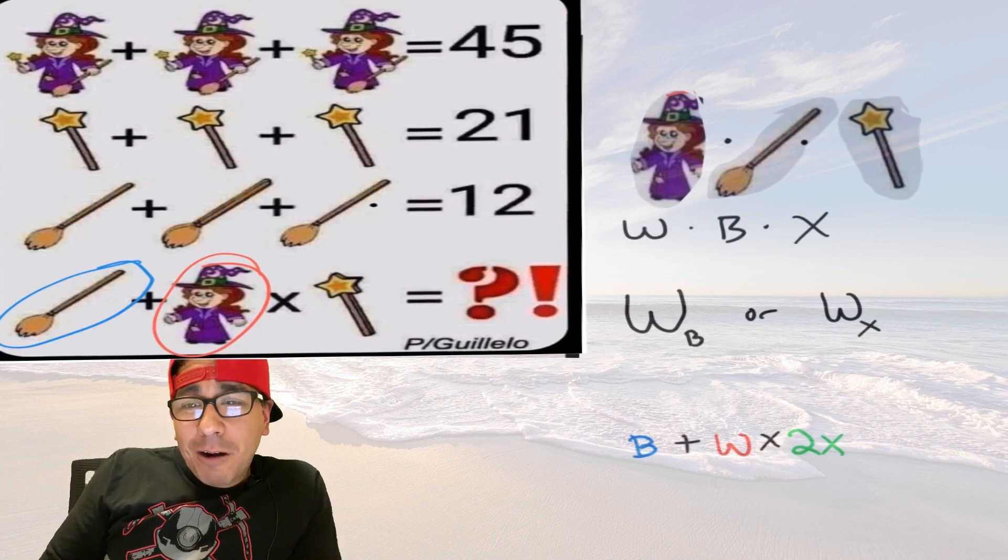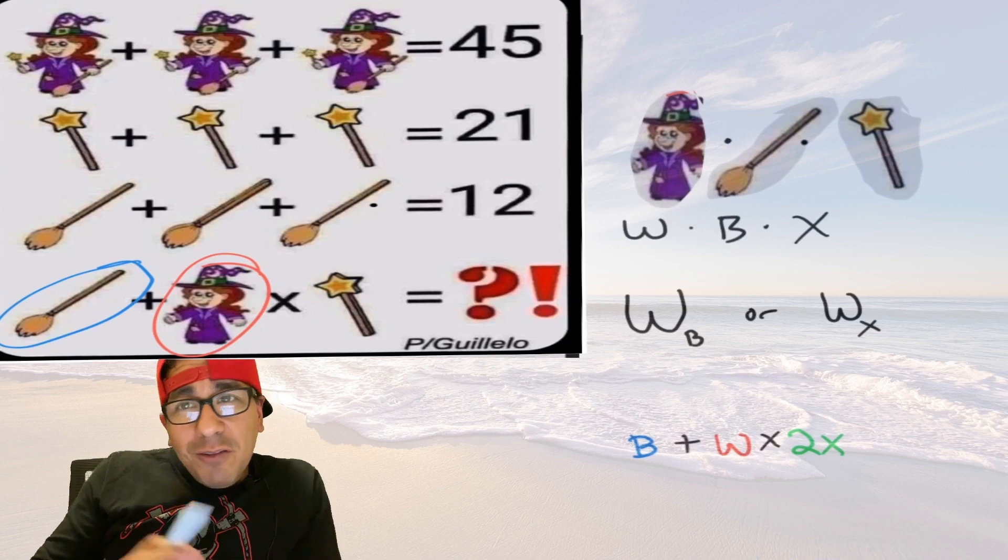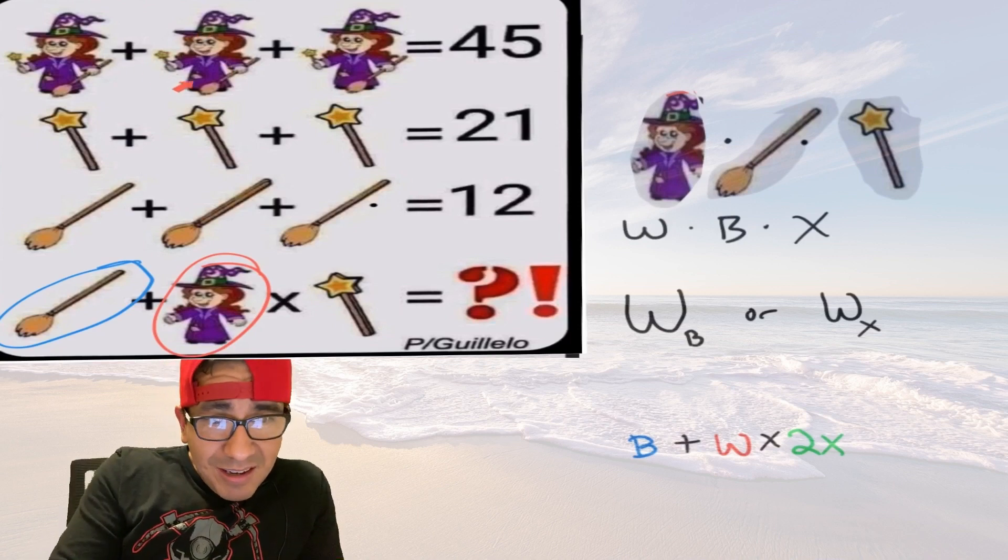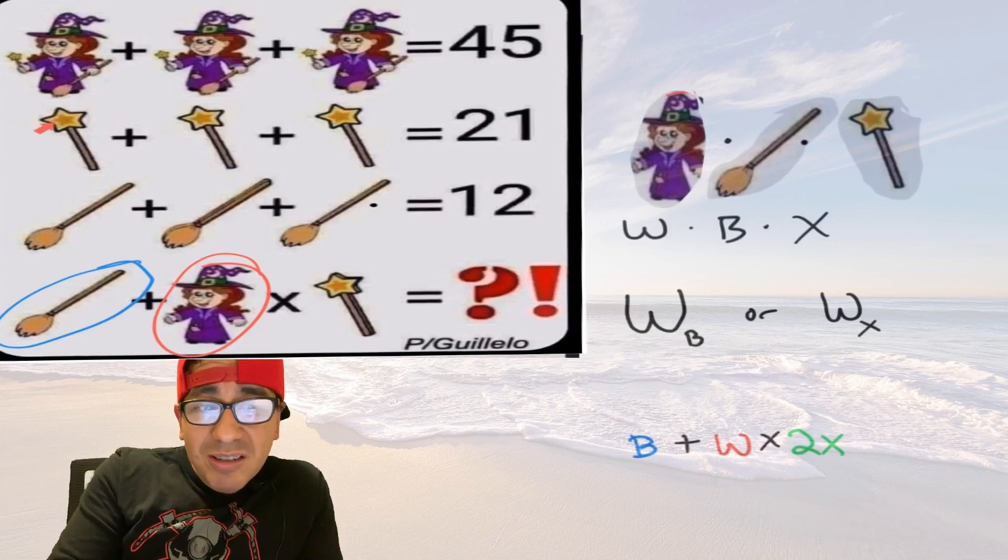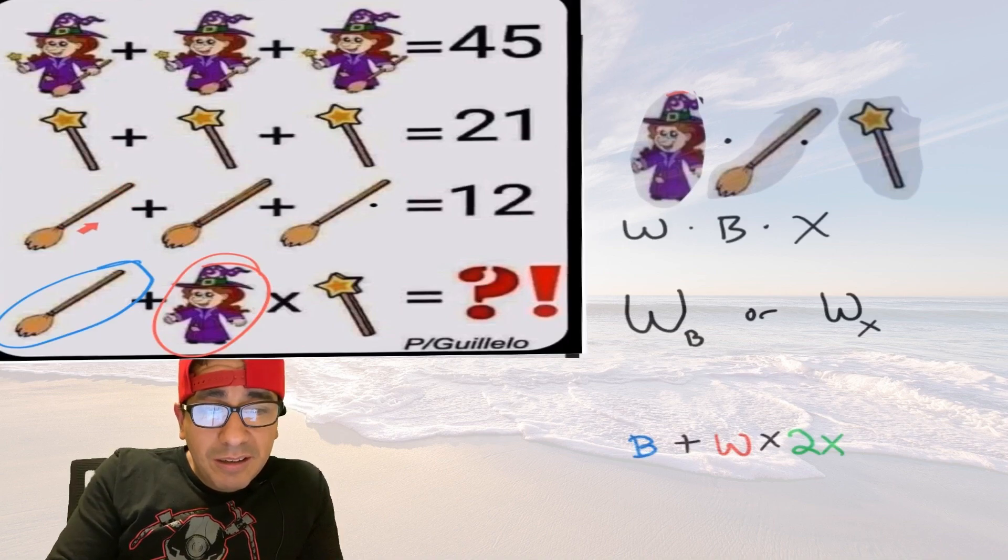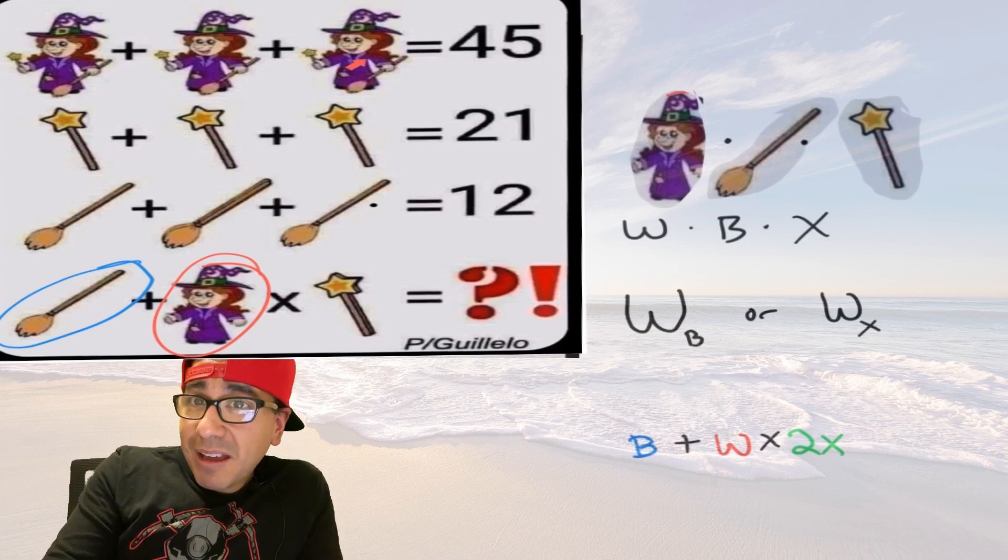So again what we have here is we have too many variables. Let's count the number of variables we have. This itself is its own variable, so there's one, there is number two, second variable, number three, number four, because we said this is not the same as this, these are two totally different images.